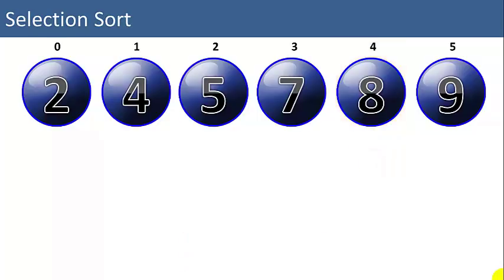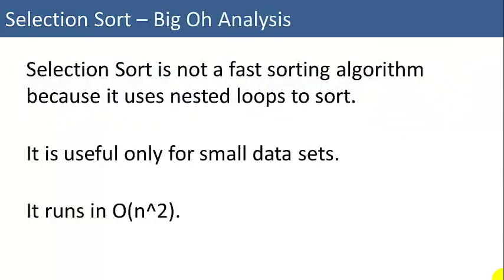So that is how the selection sort works. Selection sort is not a fast sorting algorithm because it uses nested loops to sort. Anytime you use nested loops, you typically get n squared time. So it is useful only for small data sets, and it does run in big O of n squared.